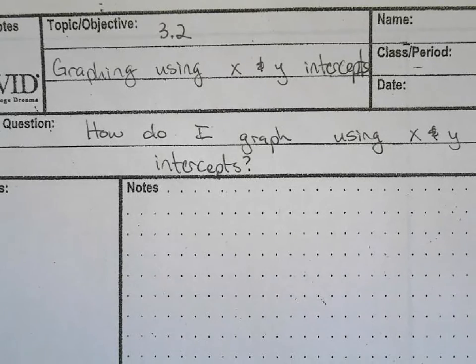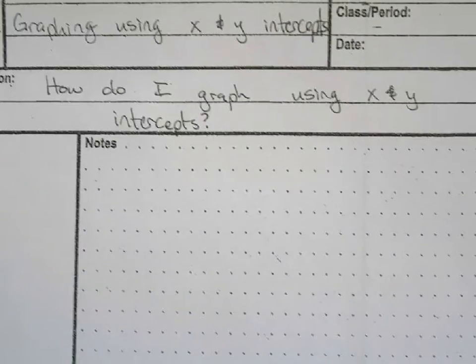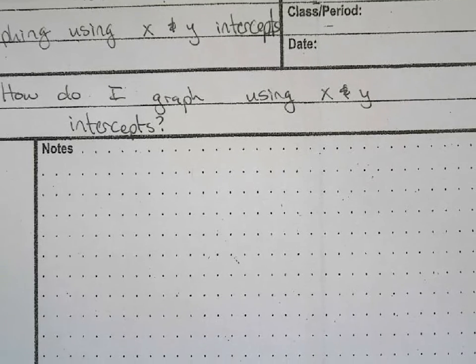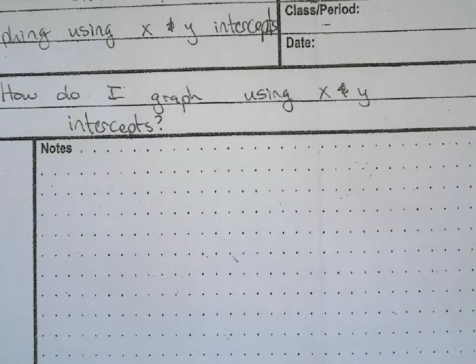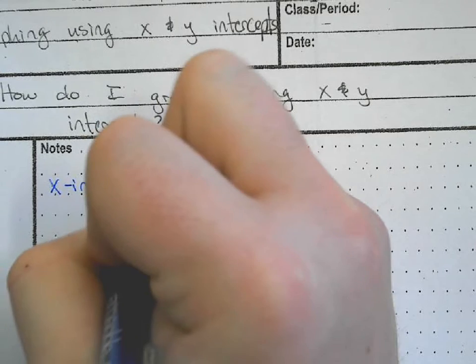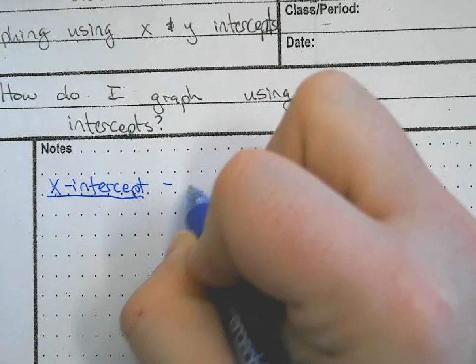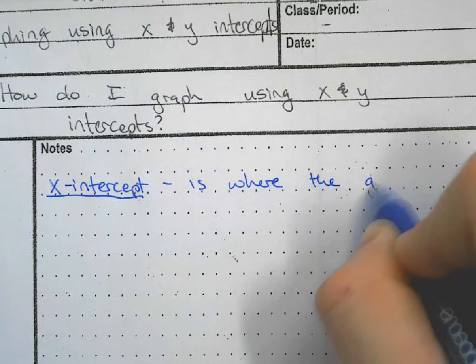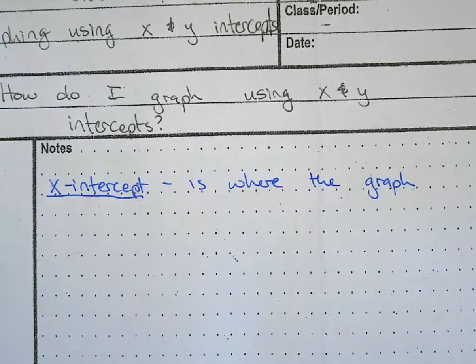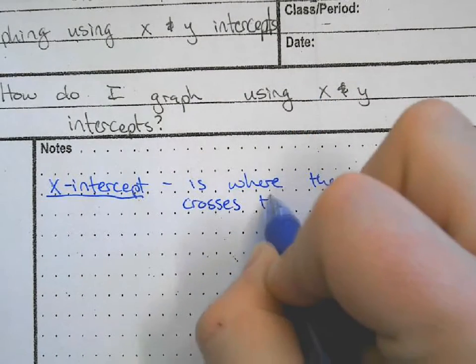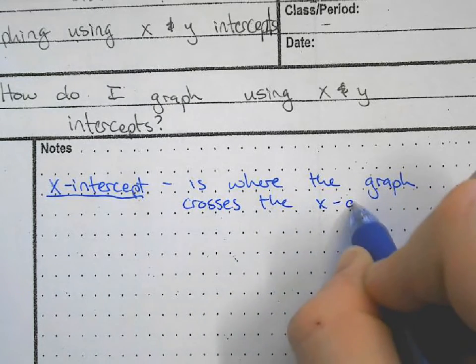The first thing we need to know is what an x and y intercept is. An x-intercept is where the graph crosses the x-axis.